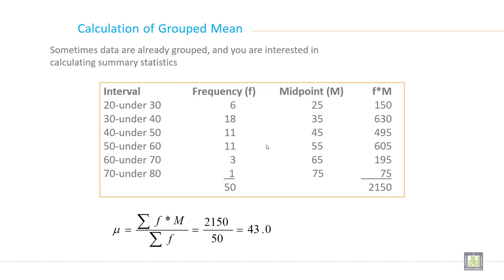Calculation of mean for grouped data. Sometimes data are already grouped and you are interested in calculating summary statistics. Sometimes it is given as raw data, but sometimes it is given as grouped data. If you have grouped data or have already converted the raw data into grouped data, how can you calculate the mean for the grouped data?